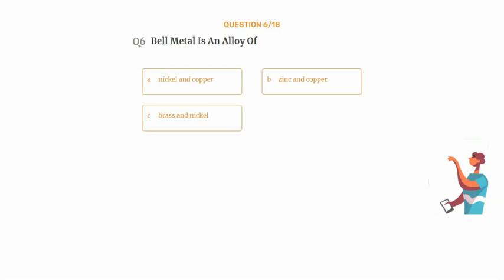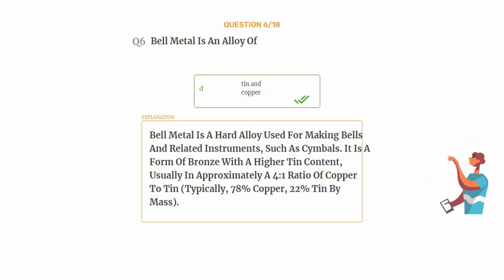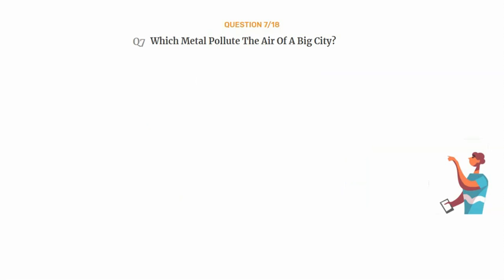Question number six: bell metal is an alloy of — option A: nickel and copper, option B: zinc and copper, option C: brass and nickel, option D: tin and copper. The correct answer is option D: tin and copper. Bell metal is a hard alloy used for making bells and related instruments such as cymbals. It is a form of bronze with a higher tin content, usually in approximately a four-to-one ratio of copper to tin — typically 78% copper and 22% tin by mass.